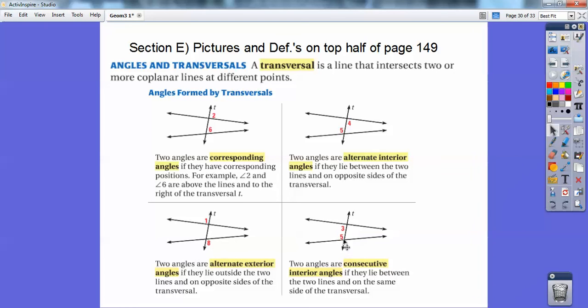These guys are called consecutive interior angles. My old geometry book called them same-sided interior angles. So I like that name better, actually, same-sided interior angles, because they're on the same side. But this book calls them consecutive interior angles.